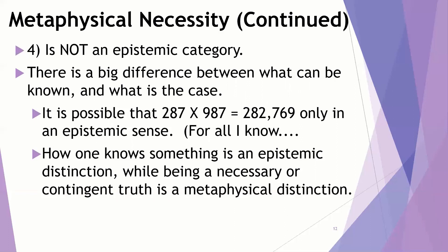If you're doing this with guessing, 987, that's pretty close to 1,000. That'd be 287,000, but it's not quite going to be that. Let's see, 7 times 7 is 49. This ends in 9. Yeah, for all I know, that's true. By the way, it's actually 283,269. That's what 287 times 987 is. How one knows something is an epistemic distinction while being a necessary or contingent truth, that's a metaphysical distinction. That's what we are interested in.